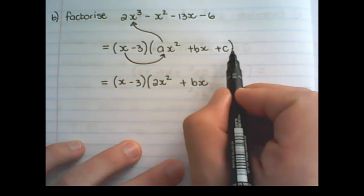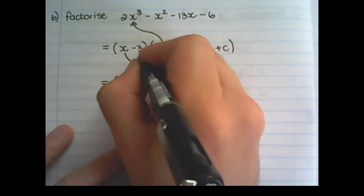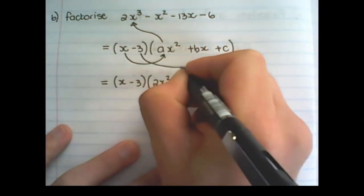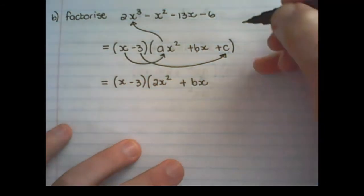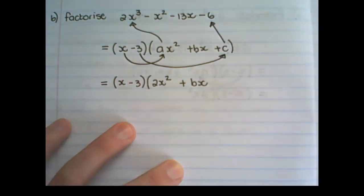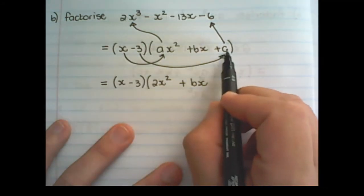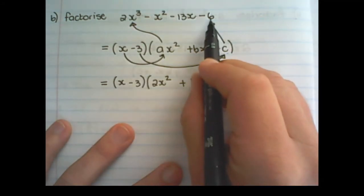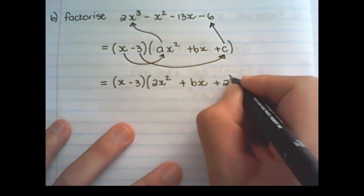I am not going to find the value of b next. Our next step is to find the constant value. So if I take the constant value in the factor, and I multiply it with c, I need to get to negative 6. So negative 3 times a positive 2 will give us negative 6. So this c value then is plus 2.